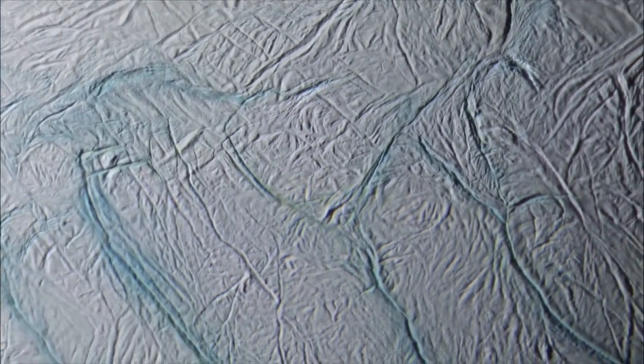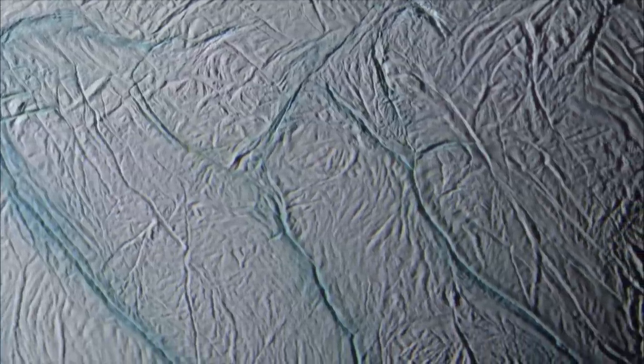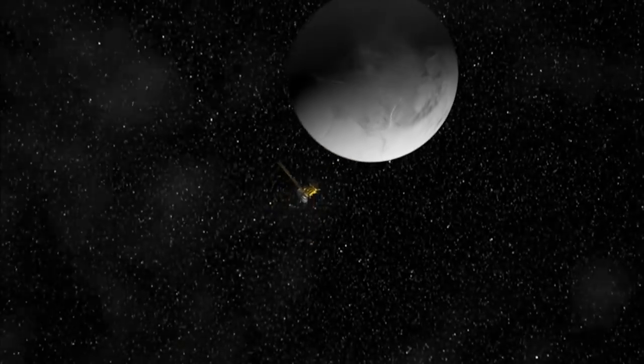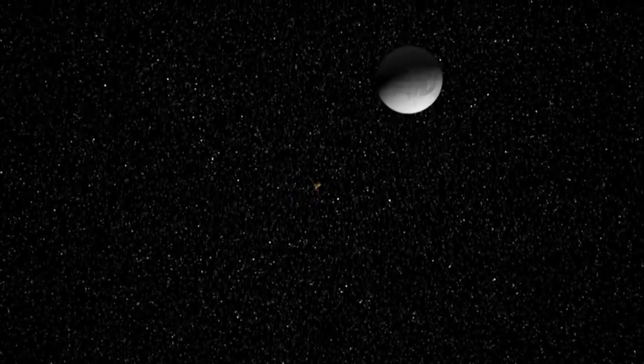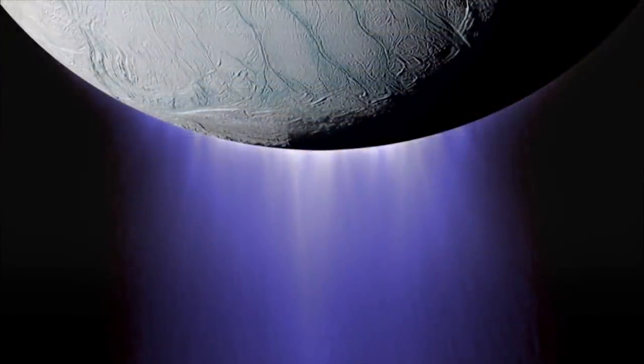Even more exciting is the presence of organic molecules near the tiger stripes. When this is combined with the likelihood of liquid water, it appears Enceladus may have all the ingredients necessary for life. For a tiny moon at the leading edge of the icy solar system, this is an astonishing revelation.